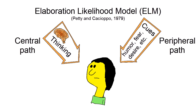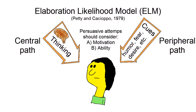The theory tells us that persuasive attempts should take into consideration the predispositions of the audience — specifically, a) the motivation to understand the message, and b) the ability to understand the message.